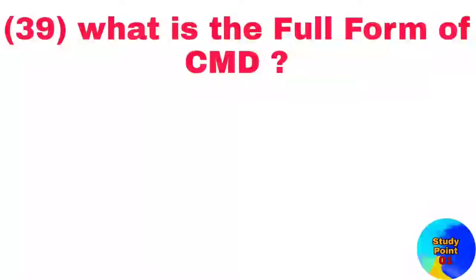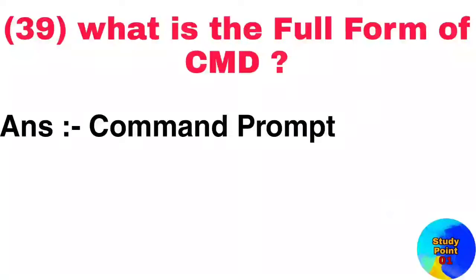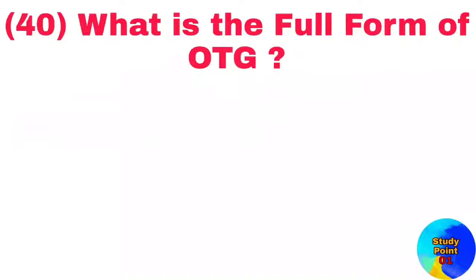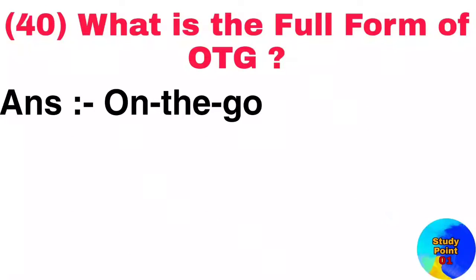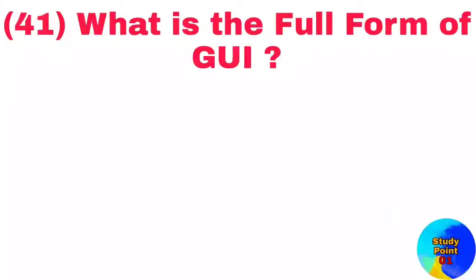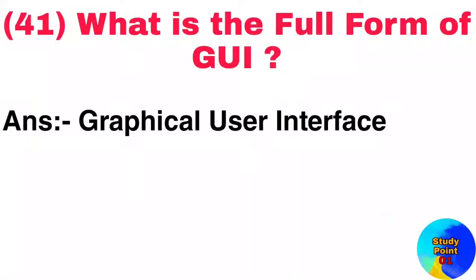Question number 39: What is the full form of CMD? Answer: Command prompt. Question number 40: What is the full form of OTG? Answer: On the go. Question number 41: What is the full form of GUI? Answer: Graphical user interface.